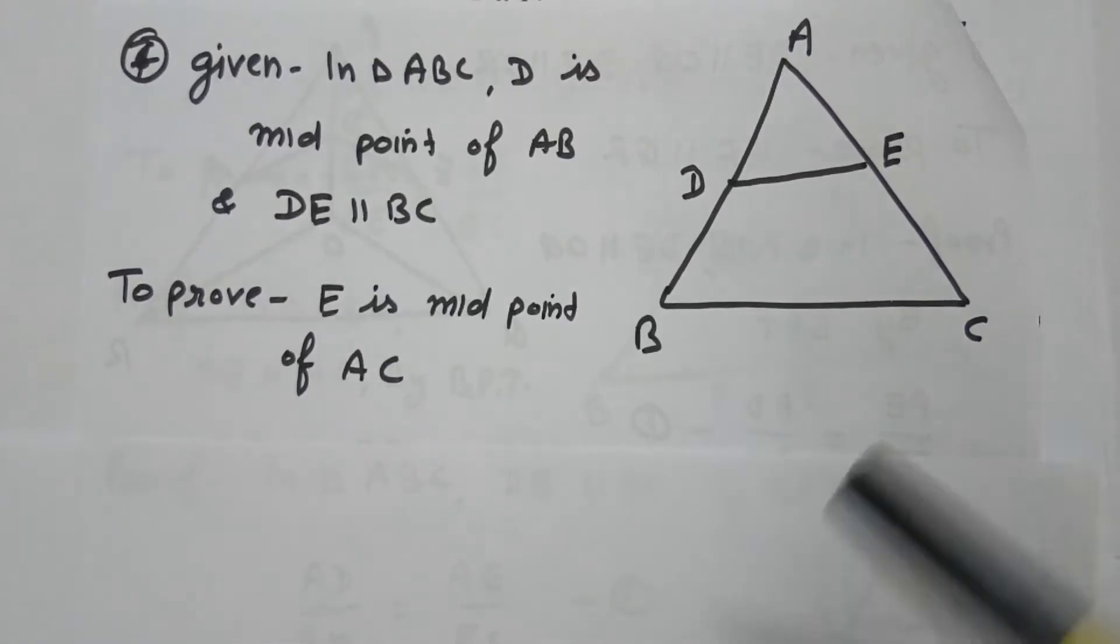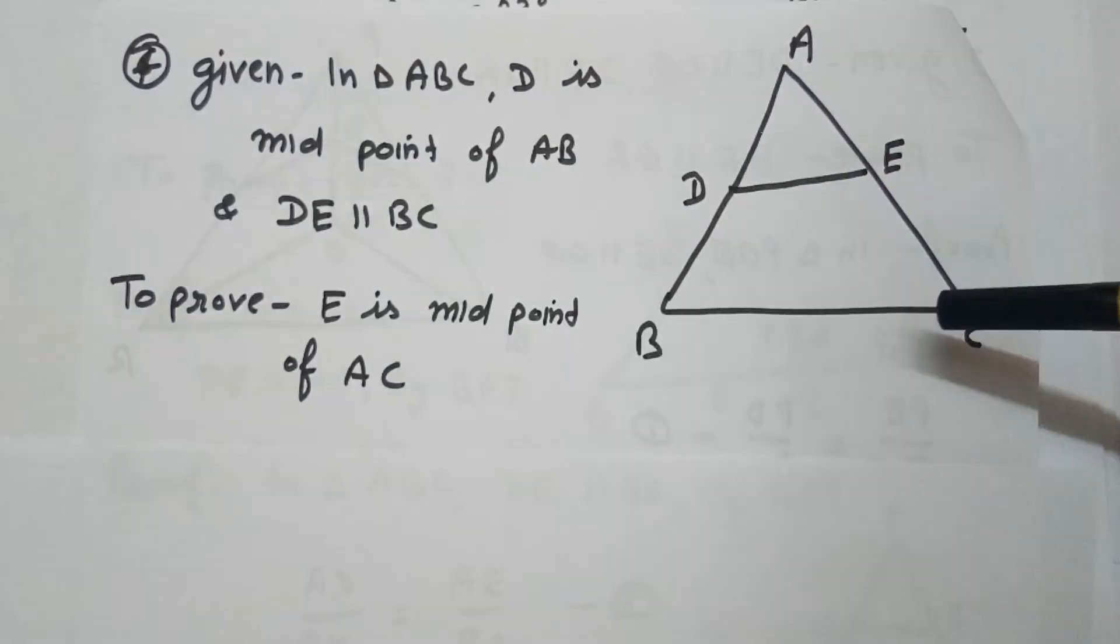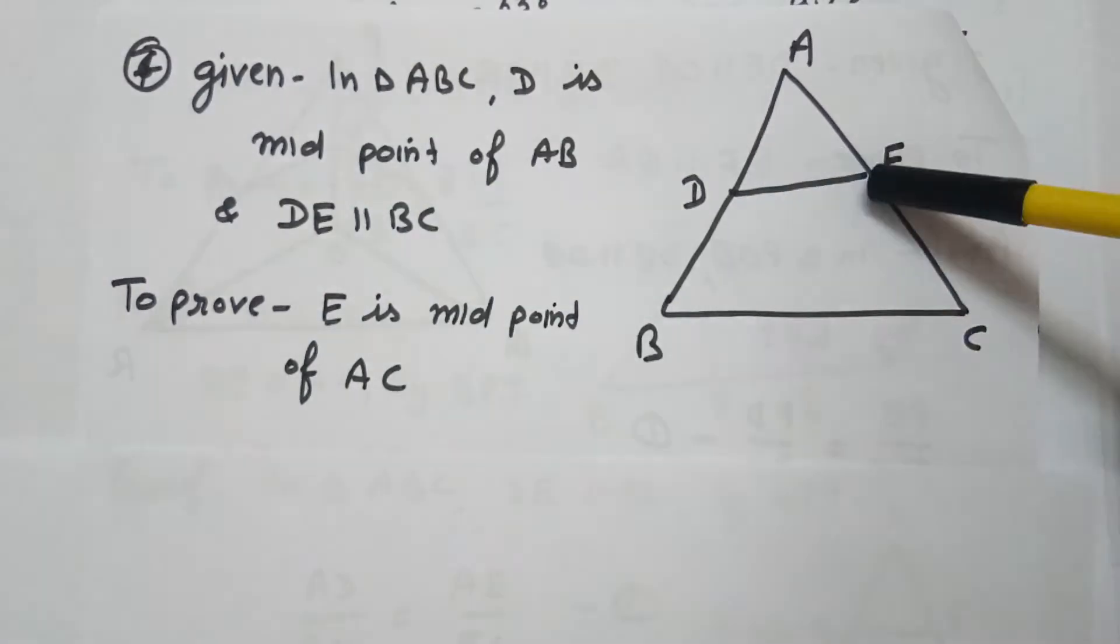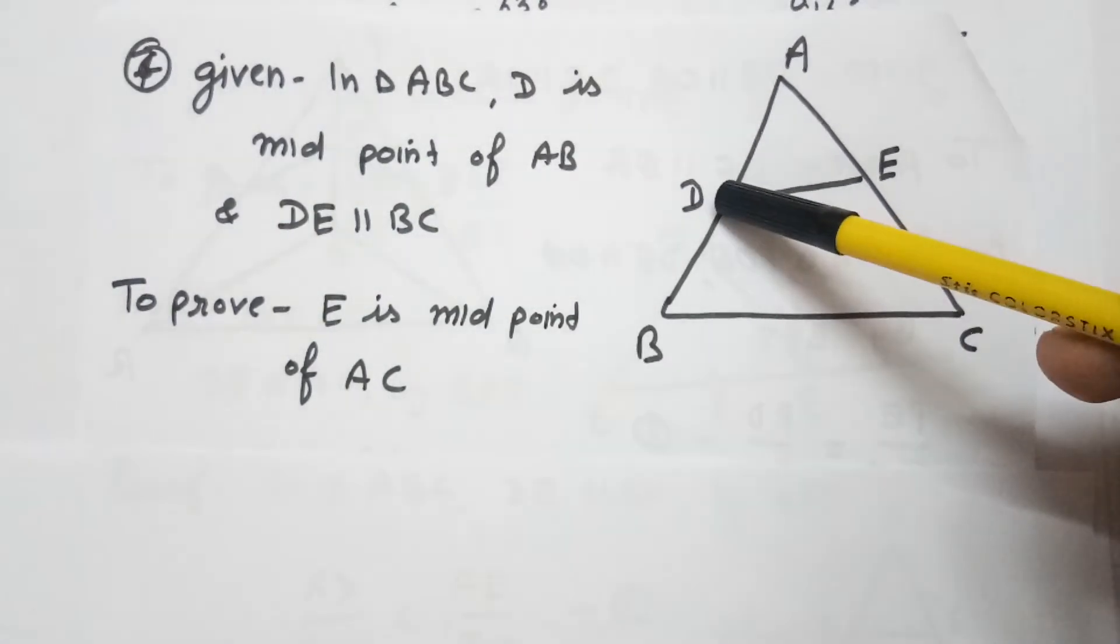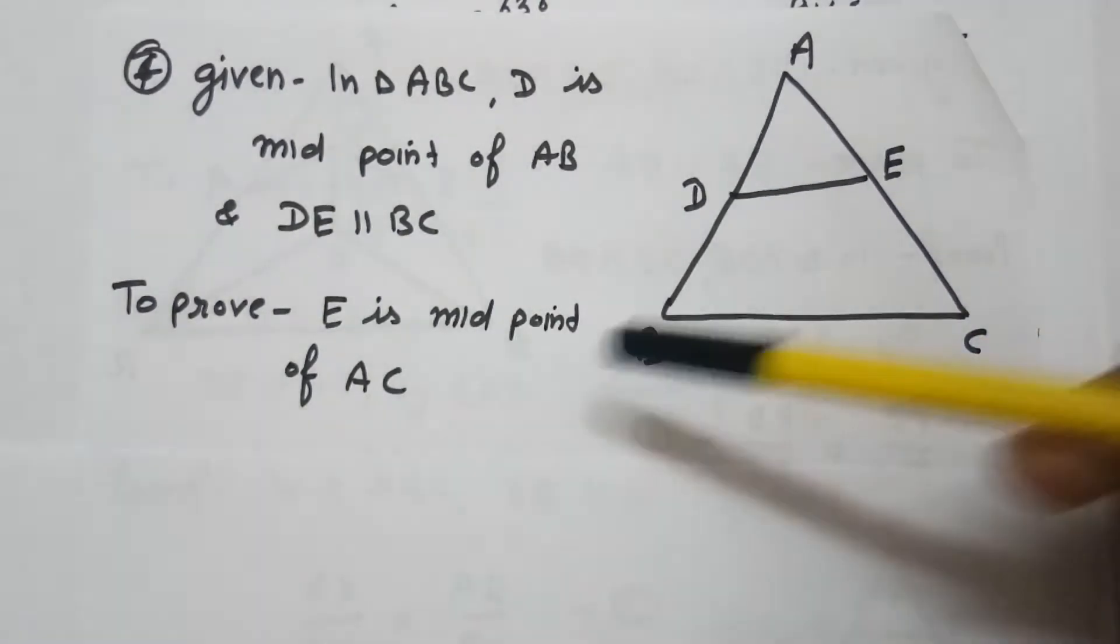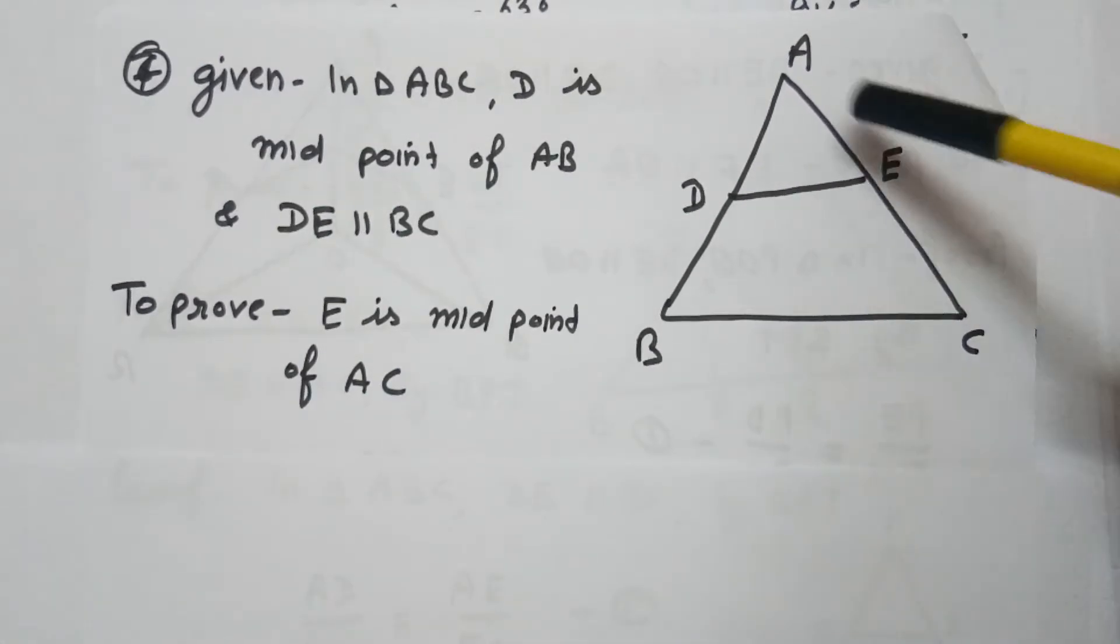Students, in this question it is given that in triangle ABC, DE is parallel to BC, and D is the midpoint of AB. We have to prove that E is the midpoint of AC.